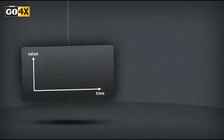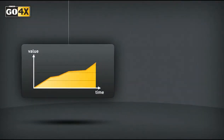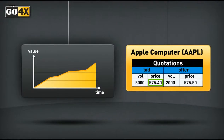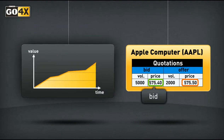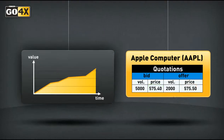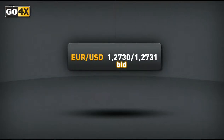This is just like a stock. For example, Apple Computer is quoted at $575.40 to $575.50. The first price is the bid price, where you can sell Apple shares, and the second price is the asked price, where you can buy Apple shares. You will always see the bid price on the left and the asked price on the right.